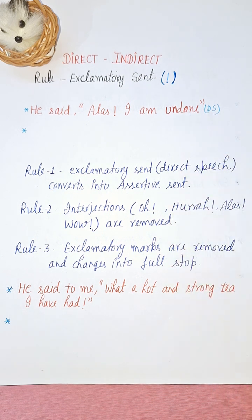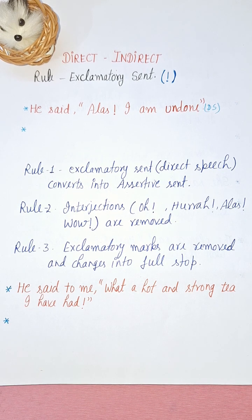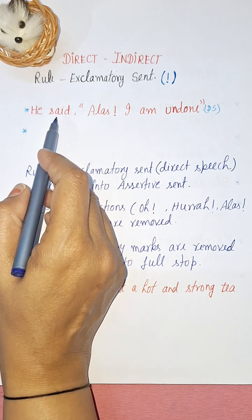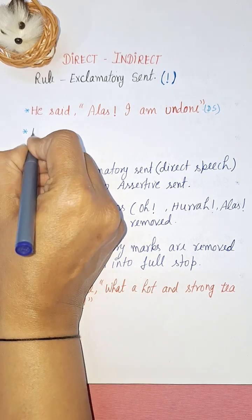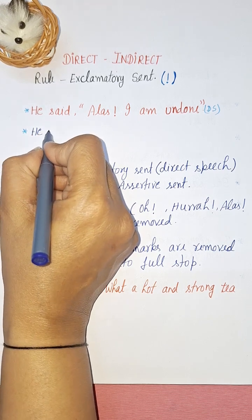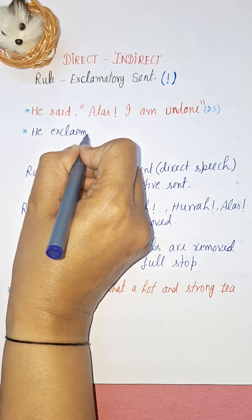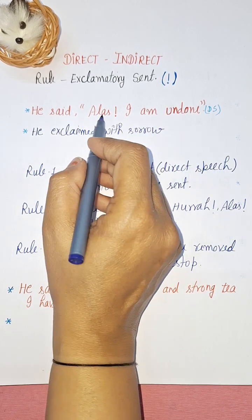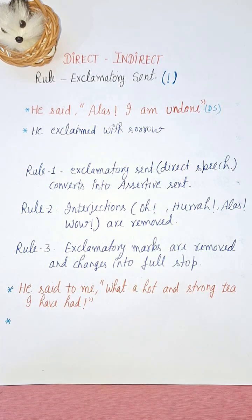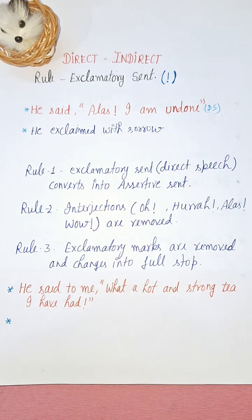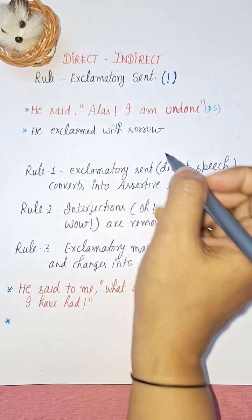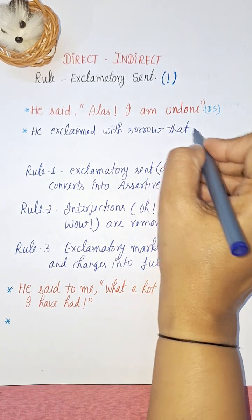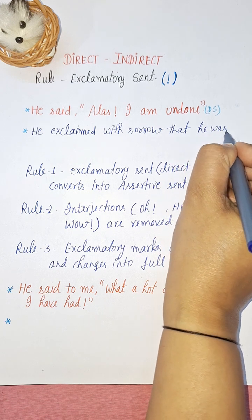Let's start with an example: 'He said, Alas! I am undone.' In exclamatory sentences, instead of 'said' you use 'exclaimed.' He exclaimed with sorrow — we use 'sorrow' because 'alas' is an interjection showing pain. Then we add 'that' instead of inverted commas: 'He exclaimed with sorrow that he was undone.'